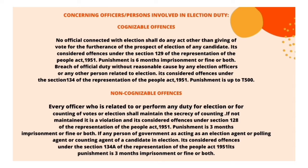Non-cognizable offense: every officer related to or performing any duty for an election, counting of votes, or related activity must maintain the secrecy of counting. Failure to do so is an offense under Section 129 of the Representation of the People Act 1951, with a punishment of three months' imprisonment, a fine, or both. If any government person acts as an election agent, polling agent, or counting agent of a candidate, it is an offense under Section 134A of the Representation of the People Act 1951, with a punishment of three months' imprisonment or a fine or both.